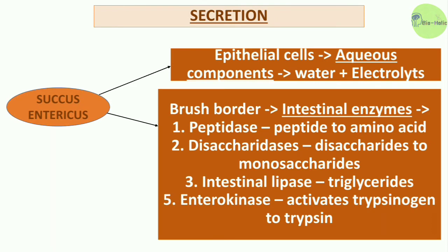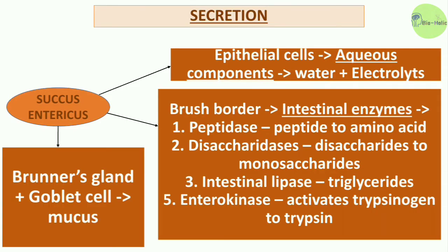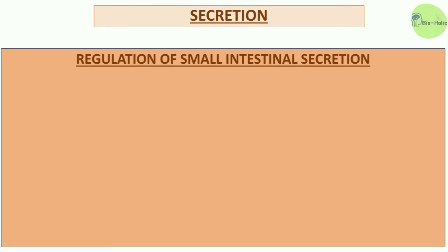The brush border of the intestinal wall secretes intestinal enzymes: peptidases that break peptides to amino acids; disaccharidases that convert disaccharides to monosaccharides; intestinal lipase that acts on triglycerides; and enterokinase which activates trypsinogen to trypsin. Mucus-secreting cells include Brunner's glands and goblet cells — both secrete mucus.